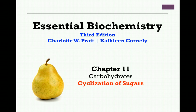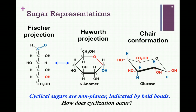In our second lesson on carbohydrates, we'll be looking at the cyclization of sugars. Recall from our last lesson, we could represent the structure of a carbohydrate in linear form as a Fischer projection, illustrated here on the far left. However, it would also be appropriate to represent it as a cyclic molecule, known as the Haworth projection, illustrated in the center of our slide. Notice the double-headed blue arrow, indicating that there is a dynamic equilibrium between the linear and cyclic forms. This is an important consideration in the reactivity of carbohydrates.